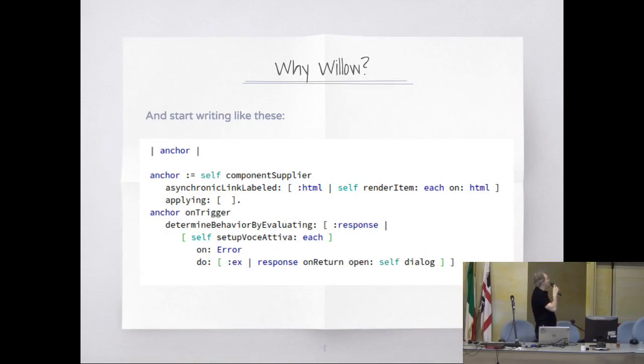This is the way that you write the same code in Willow. You ask the component supplier for something that can be clicked — an anchor or a button — and you say: on trigger, evaluate that on the server — the same code we had before — or, on error, when you return, open the dialog.